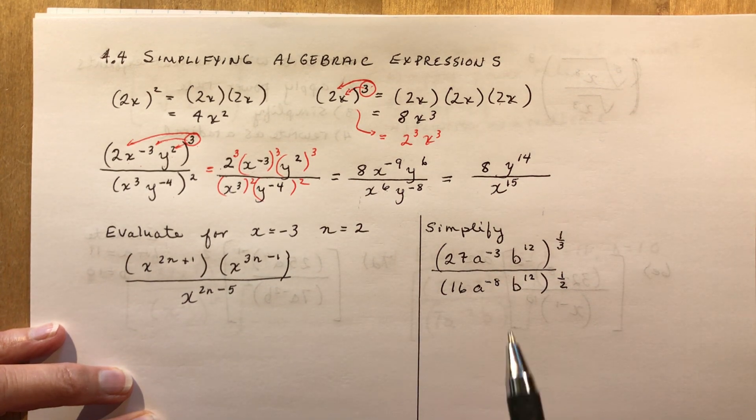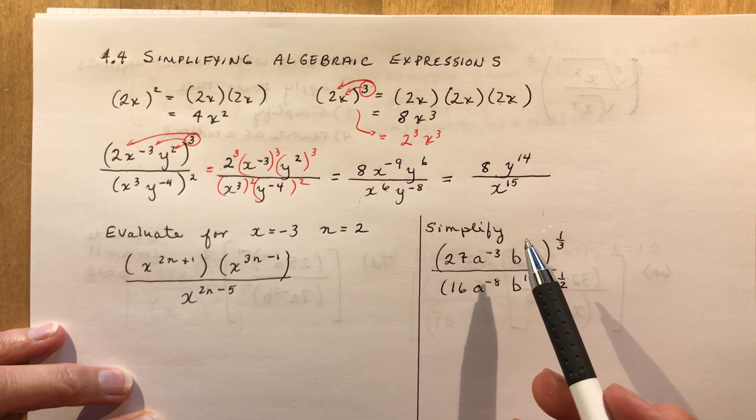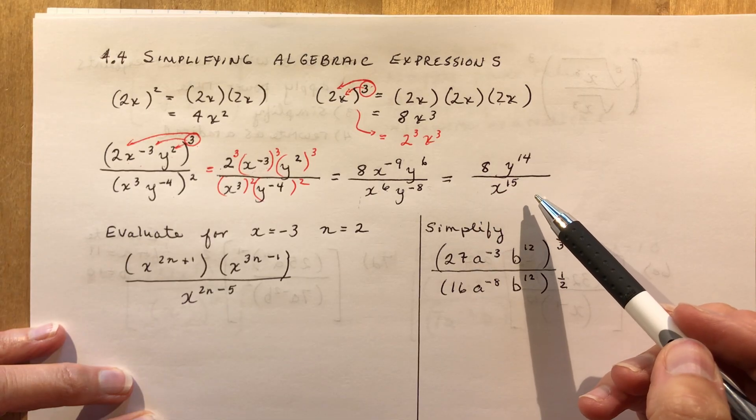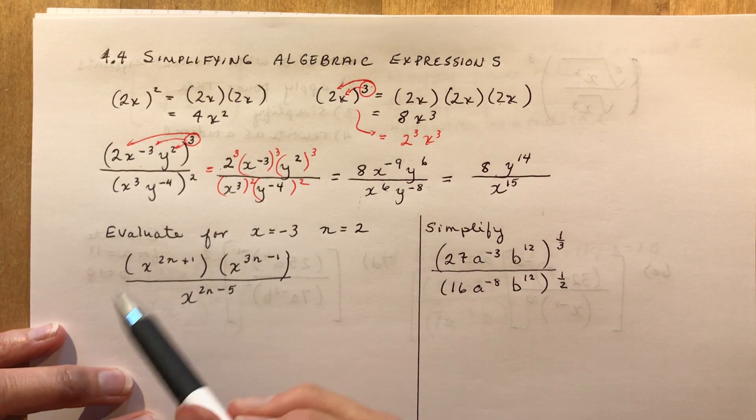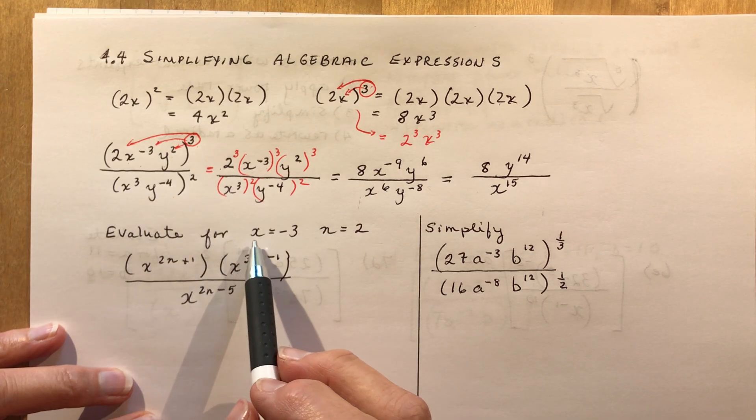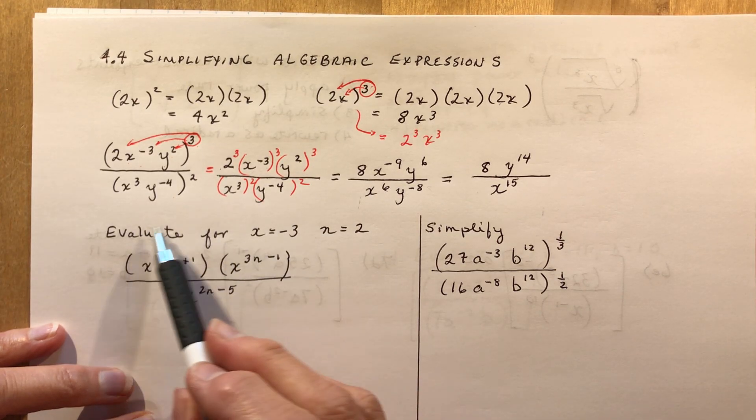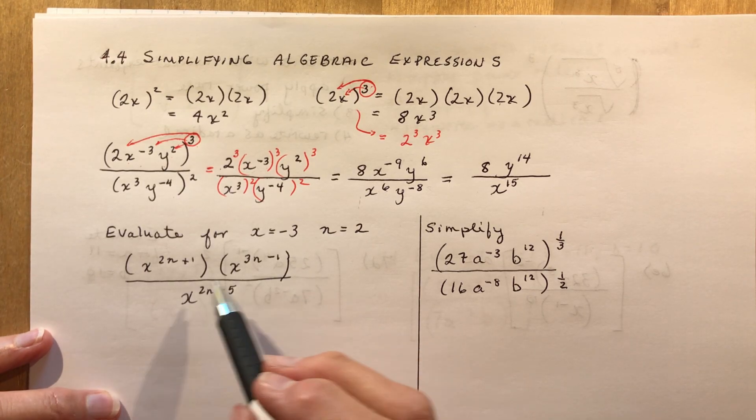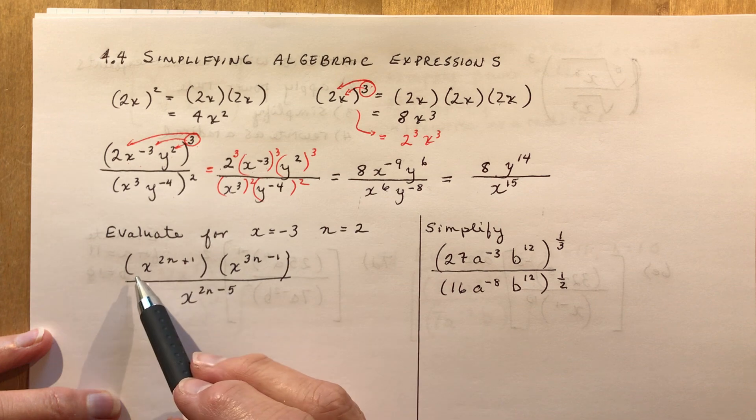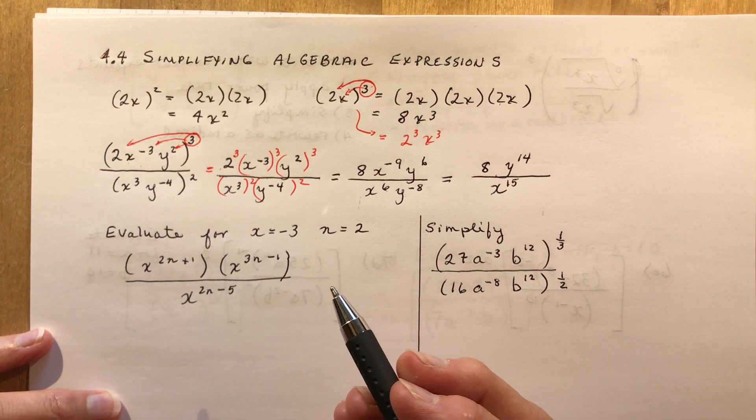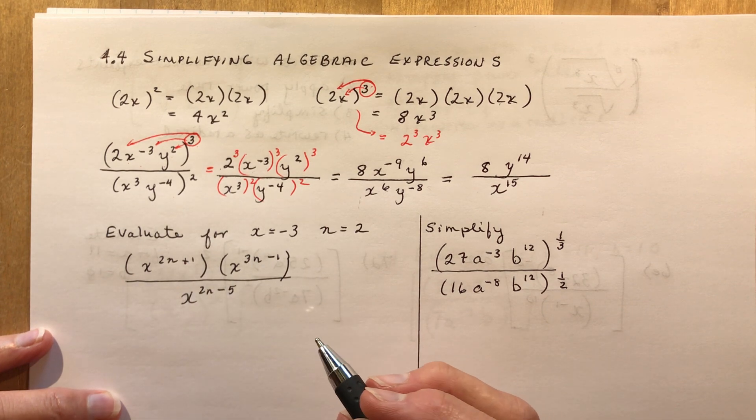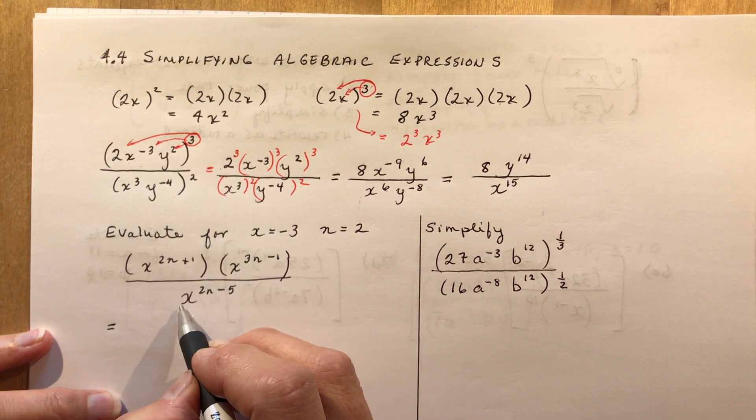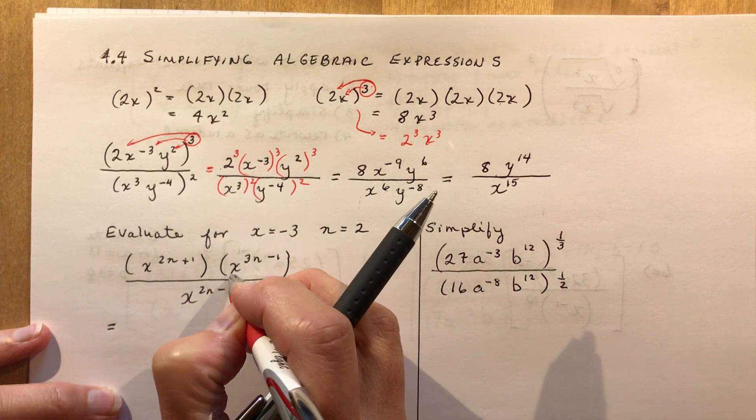So it says evaluate for x is minus 3 and n is equal to 2. So you have this big complicated question, which if you know your exponent rules, you can simplify before you plug these things in, or you could just plug them in from the start. But generally the question would say simplify and then evaluate it. So let's do that. So I'm multiplying. Notice all the bases are the same. They're all x's, right?